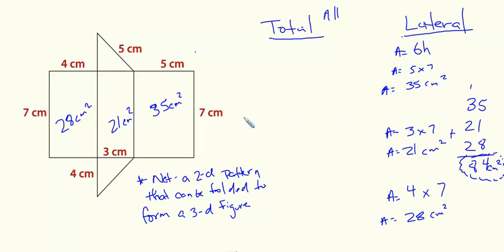Now my total surface area is going to be this 84 square centimeters, as well as the area of my two triangles.